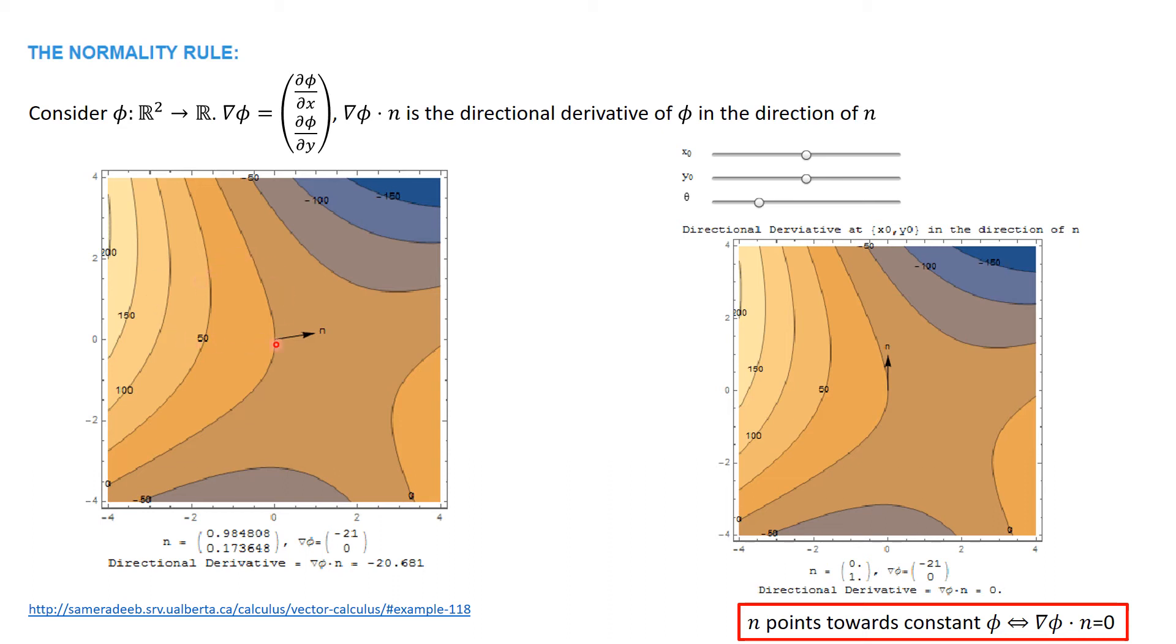On the left hand side, we can see that n points almost perpendicular to the contour plots of φ. On the right hand side, n is in the direction parallel to the contour lines. The contour lines provide locations of constant φ, and thus the directional derivative of φ along n, when n is parallel to the contour lines, is equal to 0.